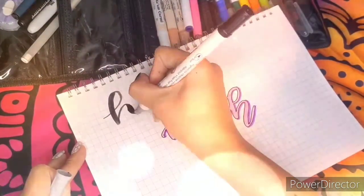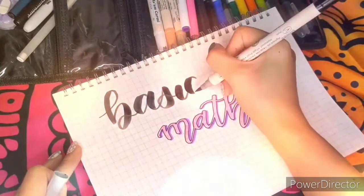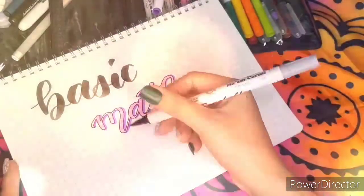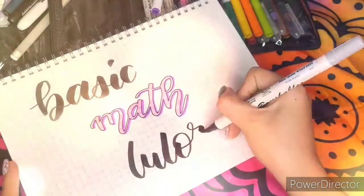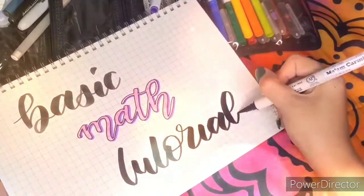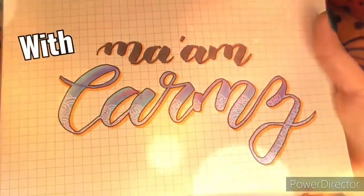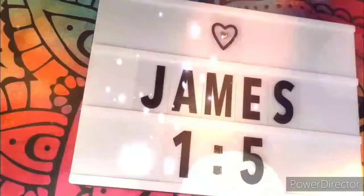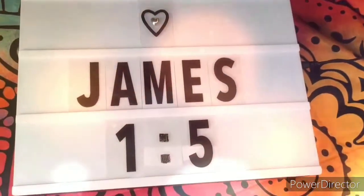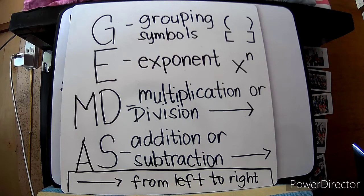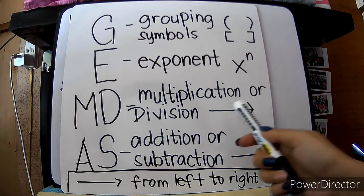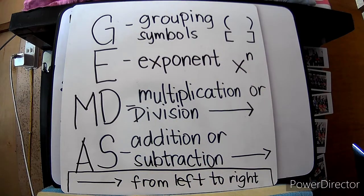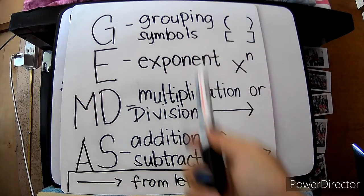Thank you for joining us. Order of operations — we will be following the GEMDAS rule: G for grouping symbol, E for exponent, D for multiplication or division as they appear from left to right, and addition or subtraction again as they appear from left to right.